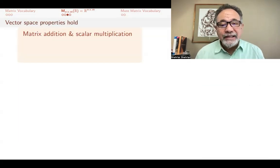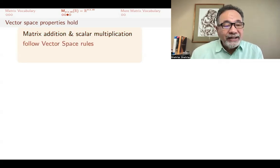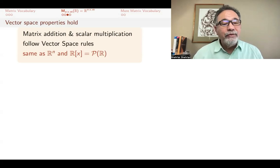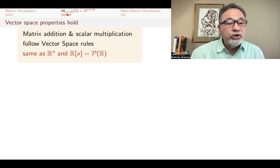The point is that we have addition and scalar multiplication for matrices, and these operations follow the rules of vector space. That's the same as the rules followed by n-tuples and polynomials. We showed that they have addition and scalar multiplication, and they follow certain rules, and those are the rules that any vector space follows, and the same is true of this addition and scalar multiplication of matrices.